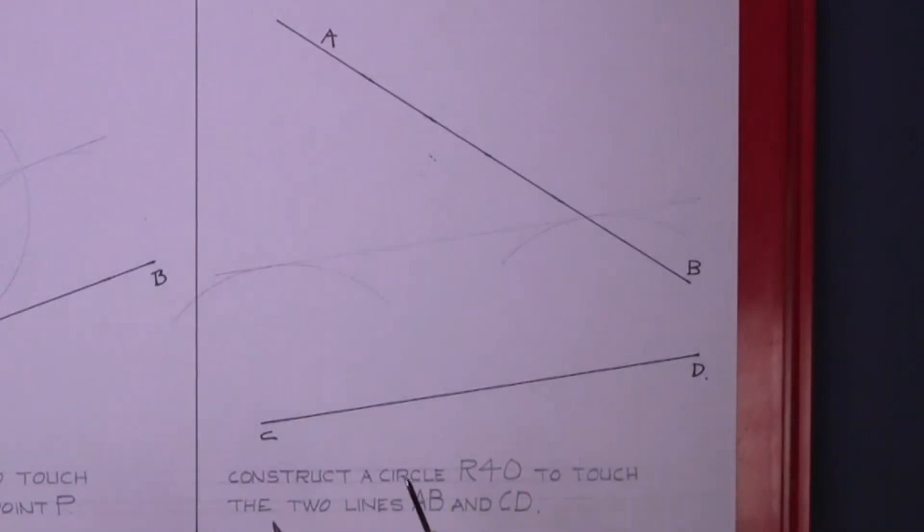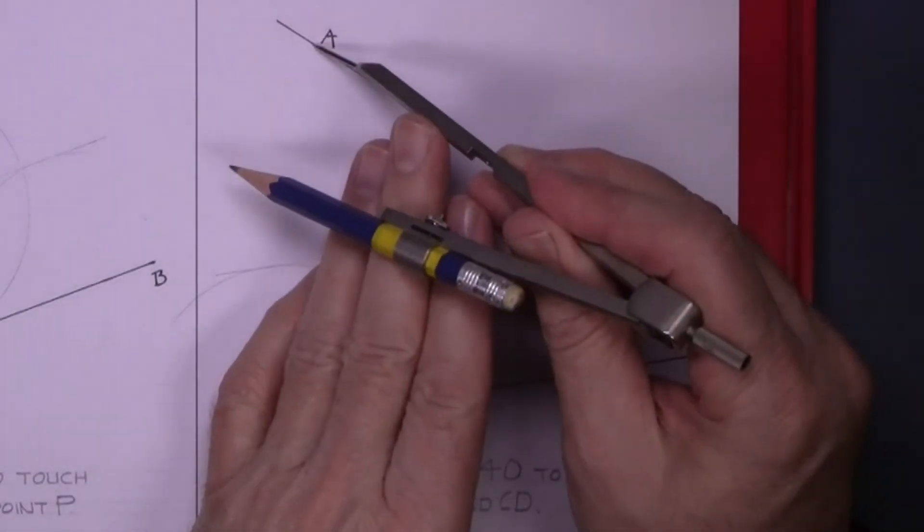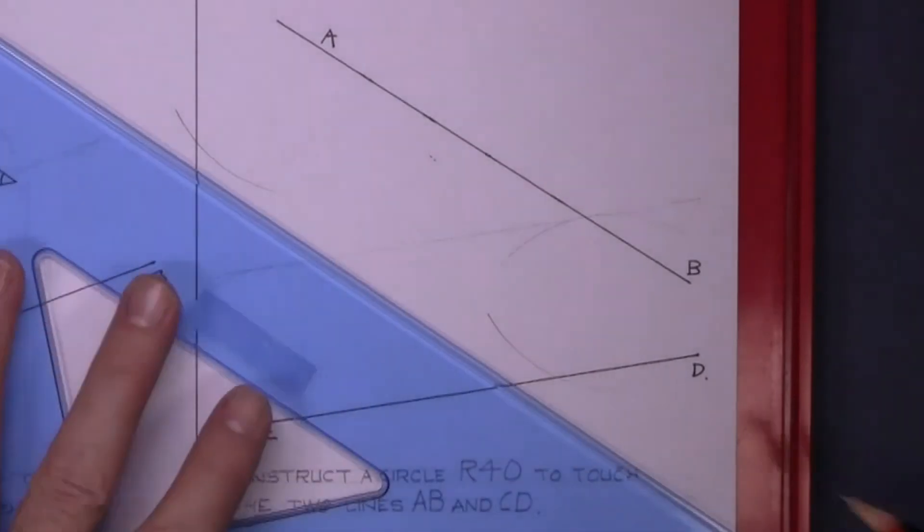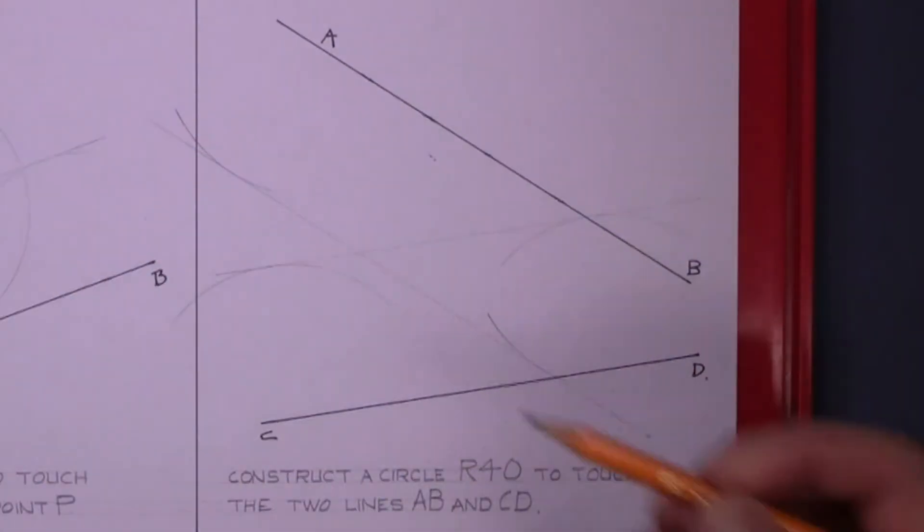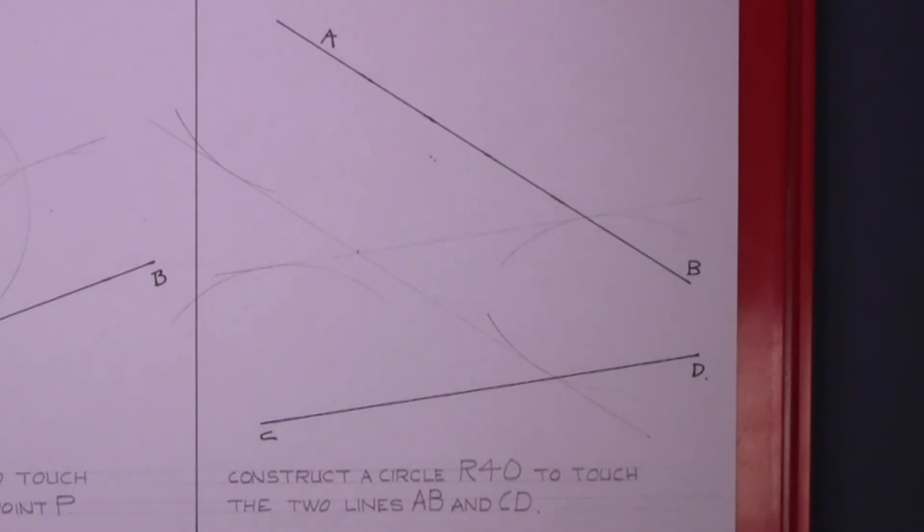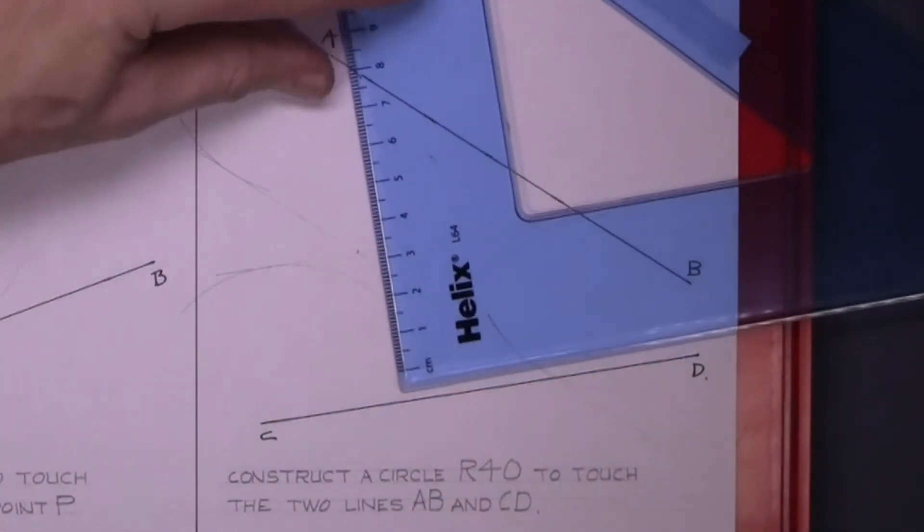That line will have gone through the center. Now do the same on line AB and that line goes through the center. That gets you the point where the center is, where the two lines cross.